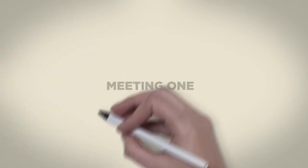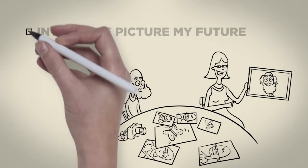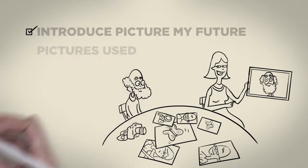Meeting 1: The support person meets with the person to explain the Picture My Future process. Talk to the person about Picture My Future and how pictures can be used to show things that are important for the future.